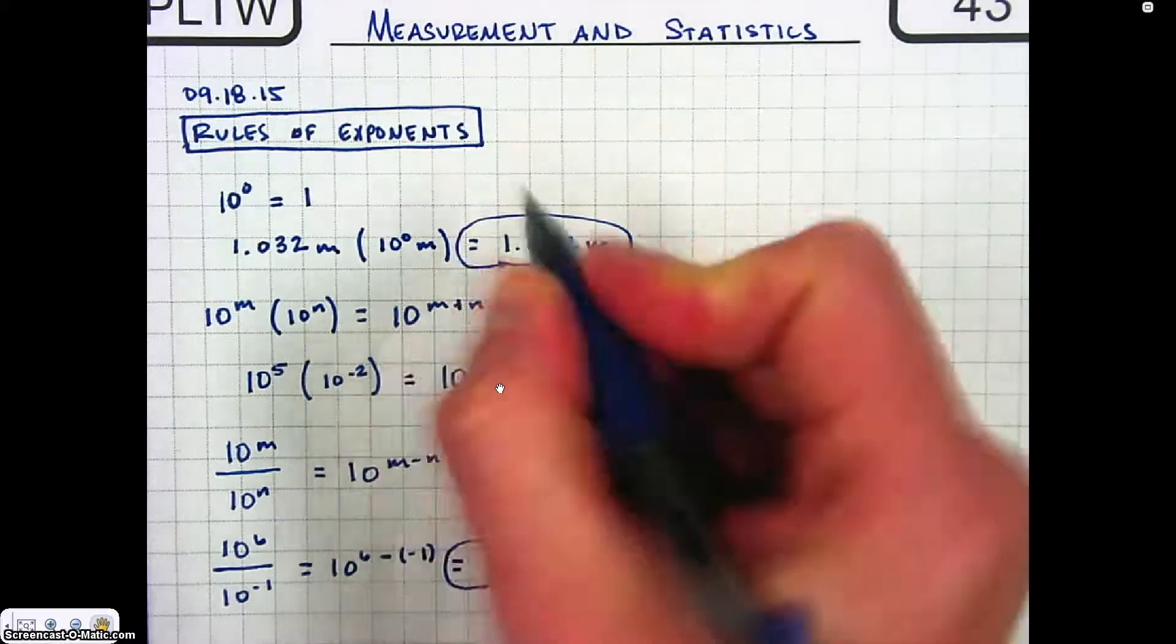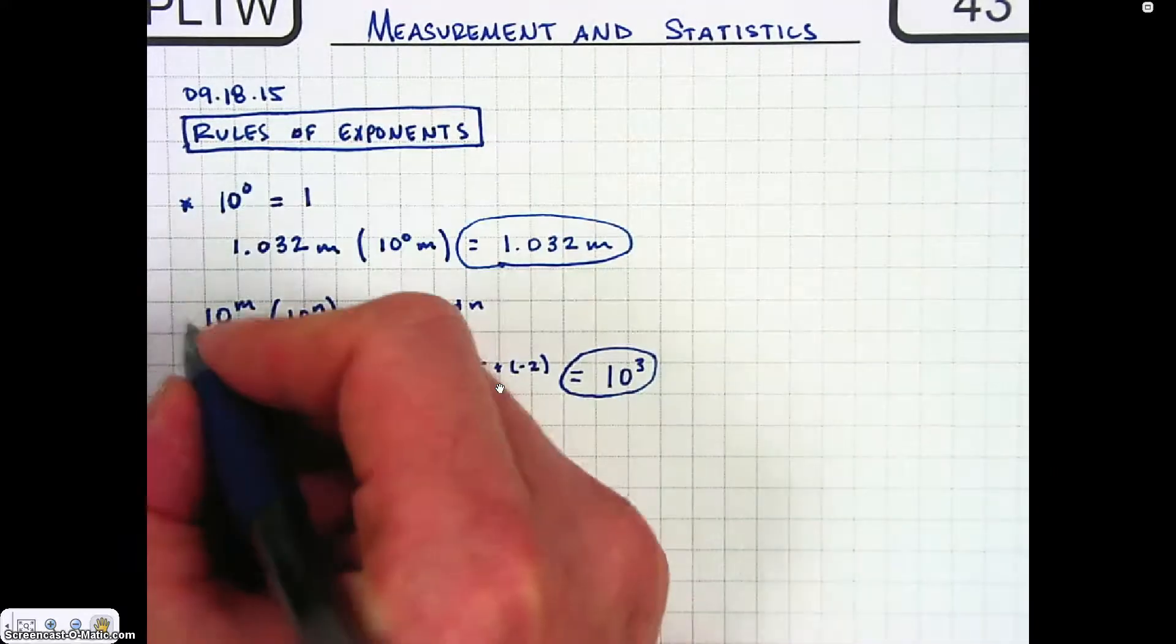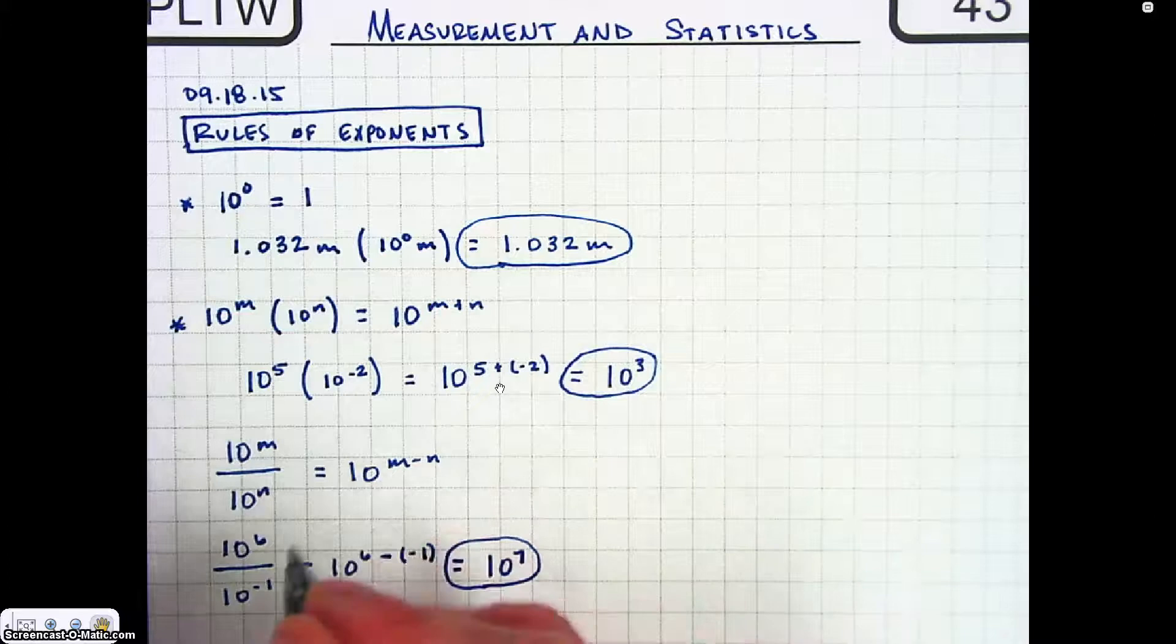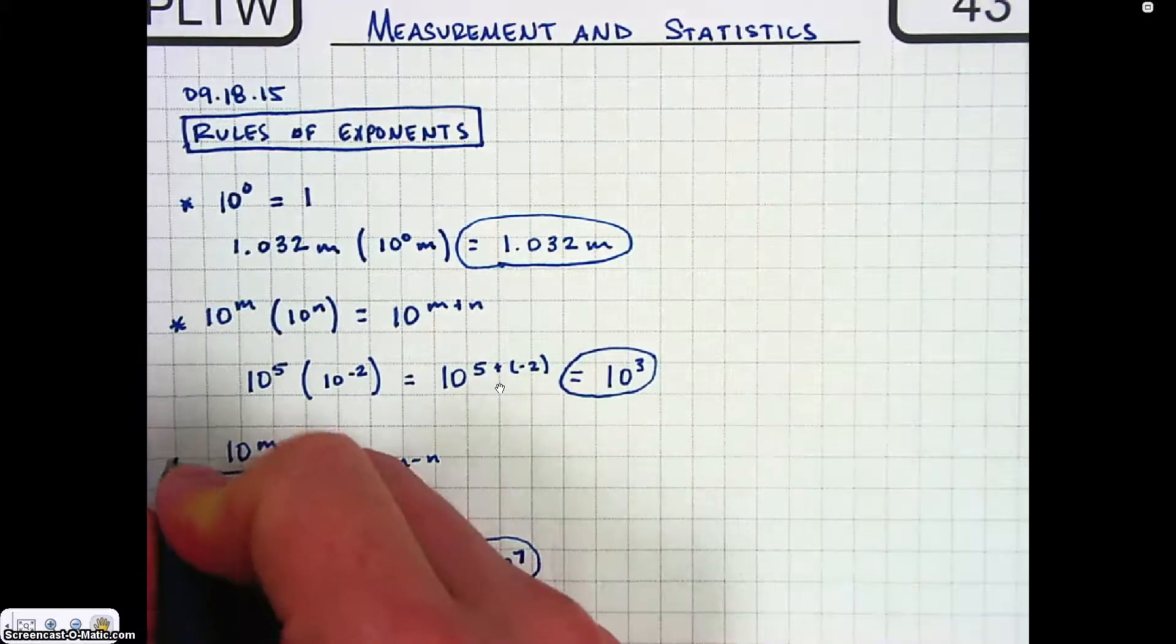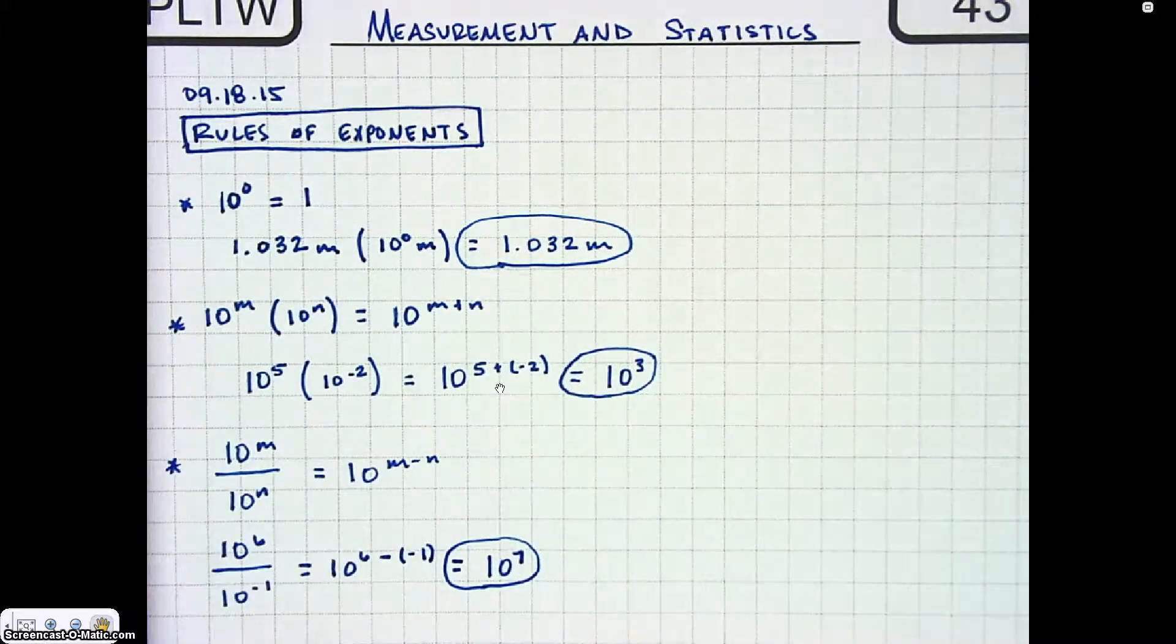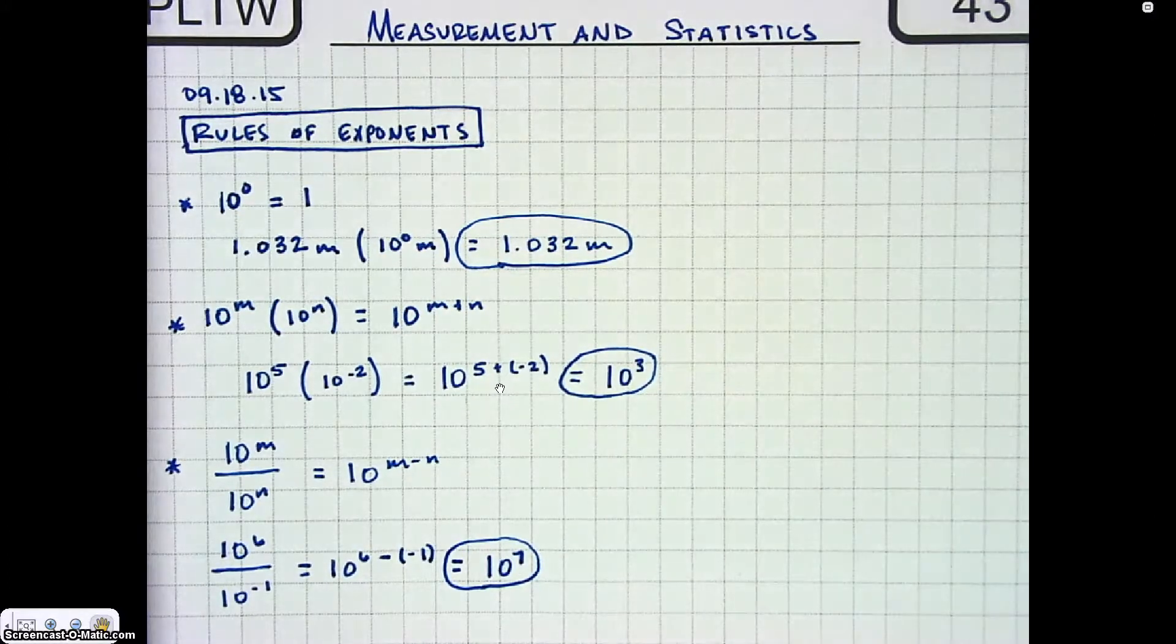So if you want to go ahead and put a little asterisk or something by the three different exponent properties we're going to use when we do unit conversion.